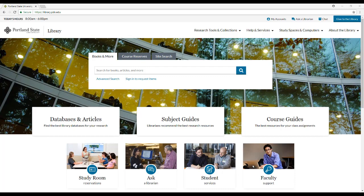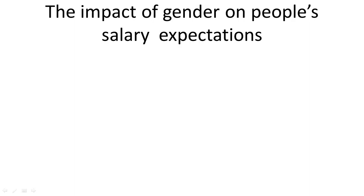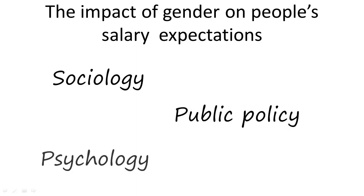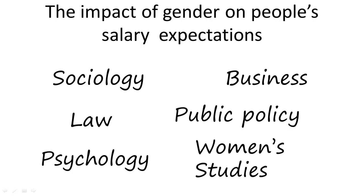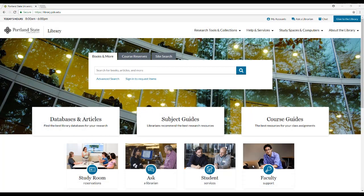In order to maximize your research, it's best to think broadly about who might be writing about your topic. Most topics are covered and researched by more than one discipline. For example, think about the many different fields the topic 'impact of gender on salary expectations' might touch on: sociology, public policy, psychology, women's studies, business, and law, to name just a few. Each of these disciplines will look at the topic through a different lens, and while you don't need to search for resources in all these fields, it's a great idea to think about these differing perspectives.